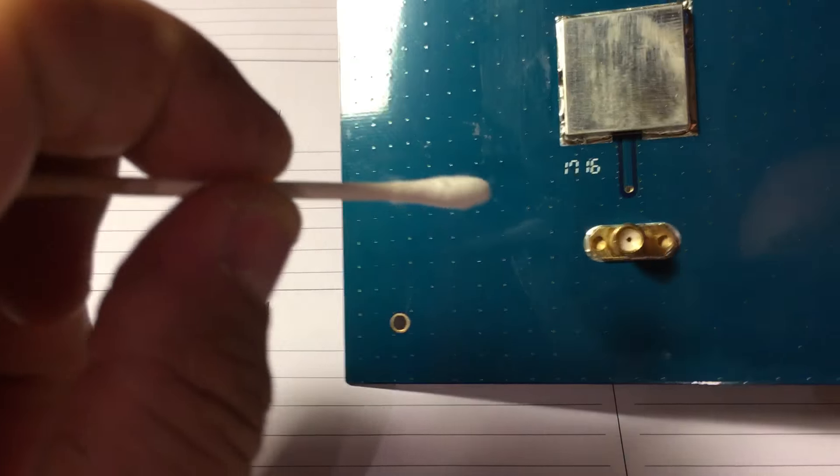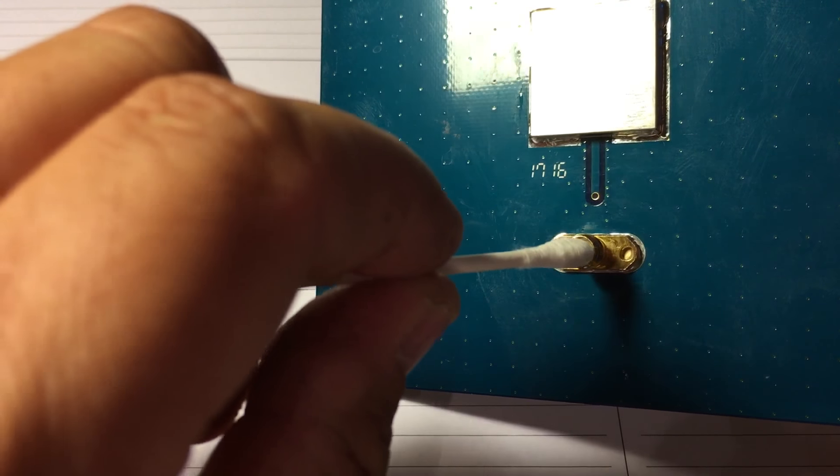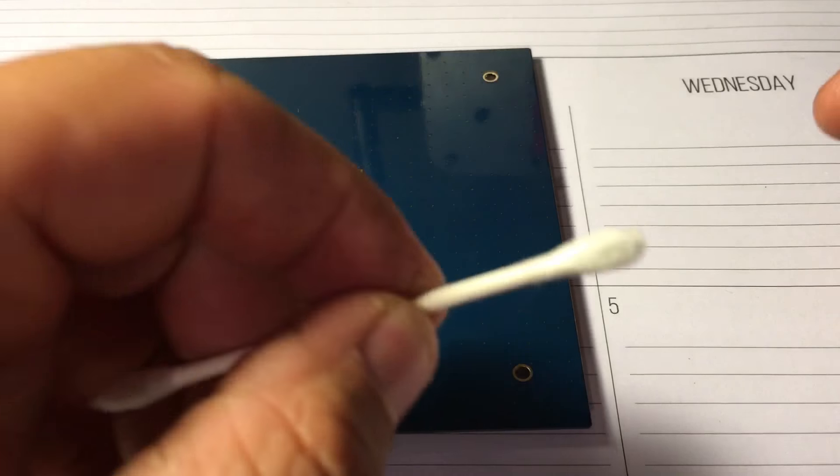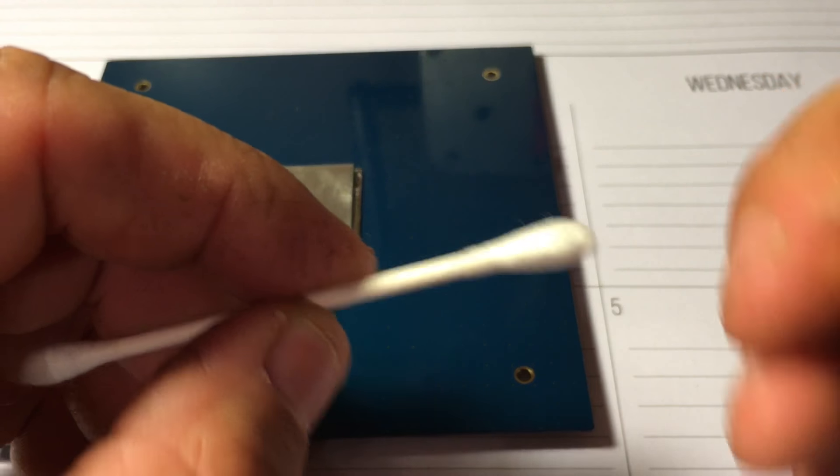I'll show you how I clean them. I take just a normal q-tip and put it in there and turn it real slow. Maybe flip it over, get another clean side. There you go, looks a lot better than it did. Let's try another q-tip, let's try this.